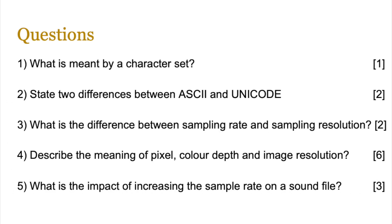That's all for today. You should be able to answer the following questions: What is meant by a character set? State two differences between ASCII and Unicode. Explain the difference between sampling rate and sampling resolution. Describe the meaning of pixel, color depth, and image resolution. And discuss the impact of increasing the sample rate on sound, or increasing the color depth or image resolution. If you have any questions, get back to me — otherwise, I'll see you in the next one.